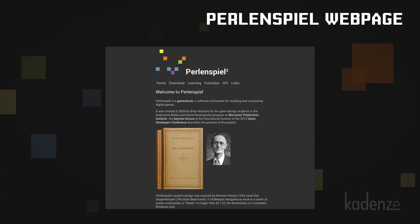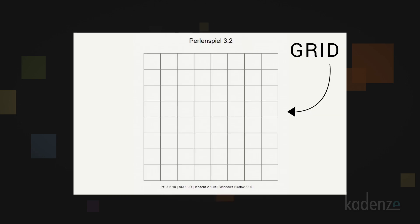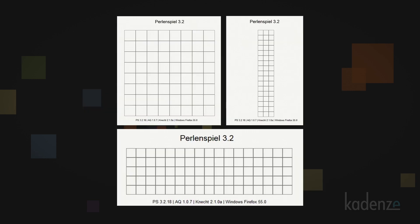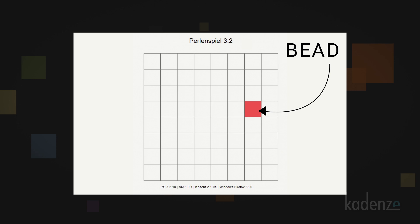A web page running Perlenspiel has two basic features. In the center of the page is the grid, a rectangular raster of megapixels — large colored squares displayed over a solid color background. The grid doesn't need to be square. You can specify any rectangular layout ranging from a single giant bead to a maximum of 32 beads horizontally or vertically. You can change the layout of the grid and the color of its background anytime you want. You can also control the color and many other visual attributes of each bead individually.